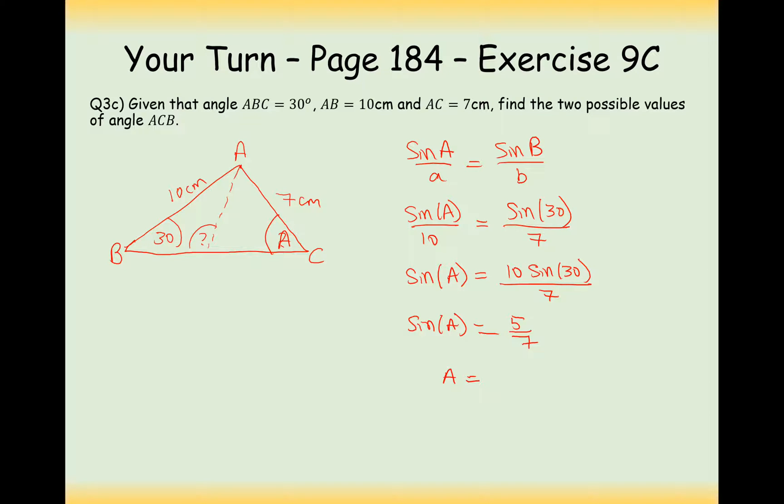So in this case here, so A is going to equal inverse sine of 5 over 7, which is equal to 45.6. So that's in this case here. The alternative case will be 180 take away 45.6, which is equal to 134.4.